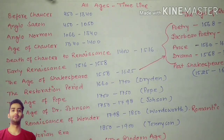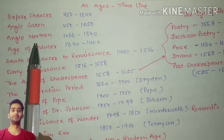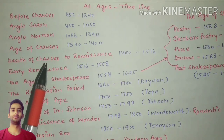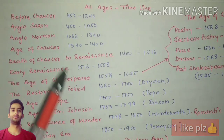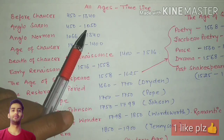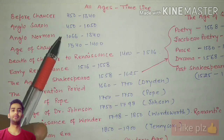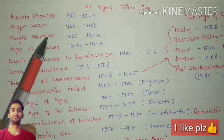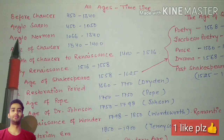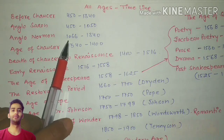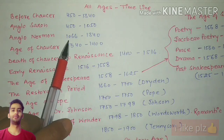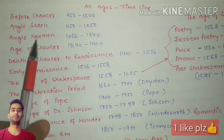Let's start today's video. The first topic is 'Before Chaucer.' The first target is to remember all the ages and the timeline of the History of English Literature. Before Chaucer spans 450 to 1340 — 1340 being the birth year of Chaucer, the Father of English Literature. The Anglo-Saxon period is from 450 to 1050. The Anglo-Norman period starts from 1066 to 1340, where 1066 is the year of the Norman Conquest.